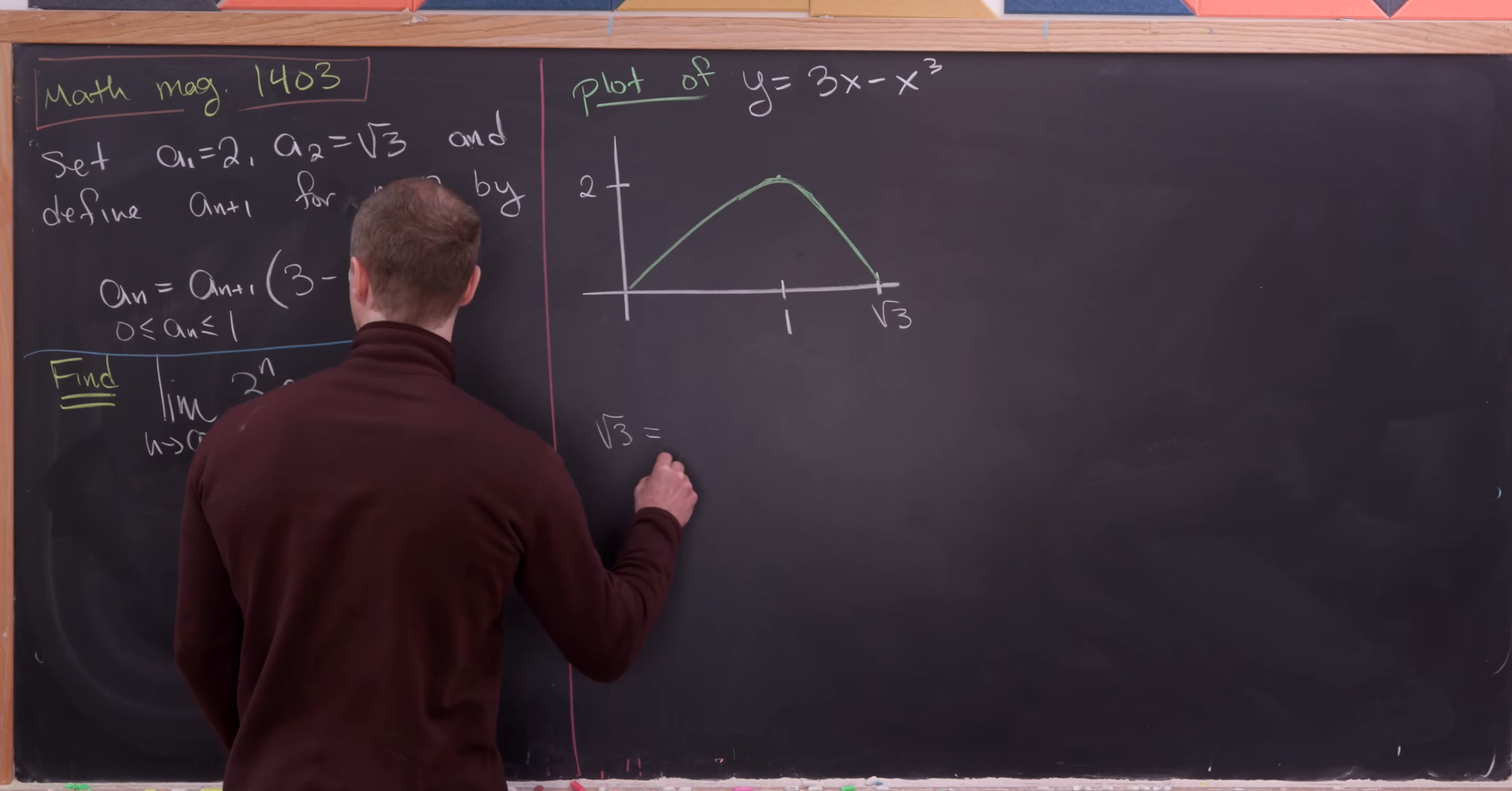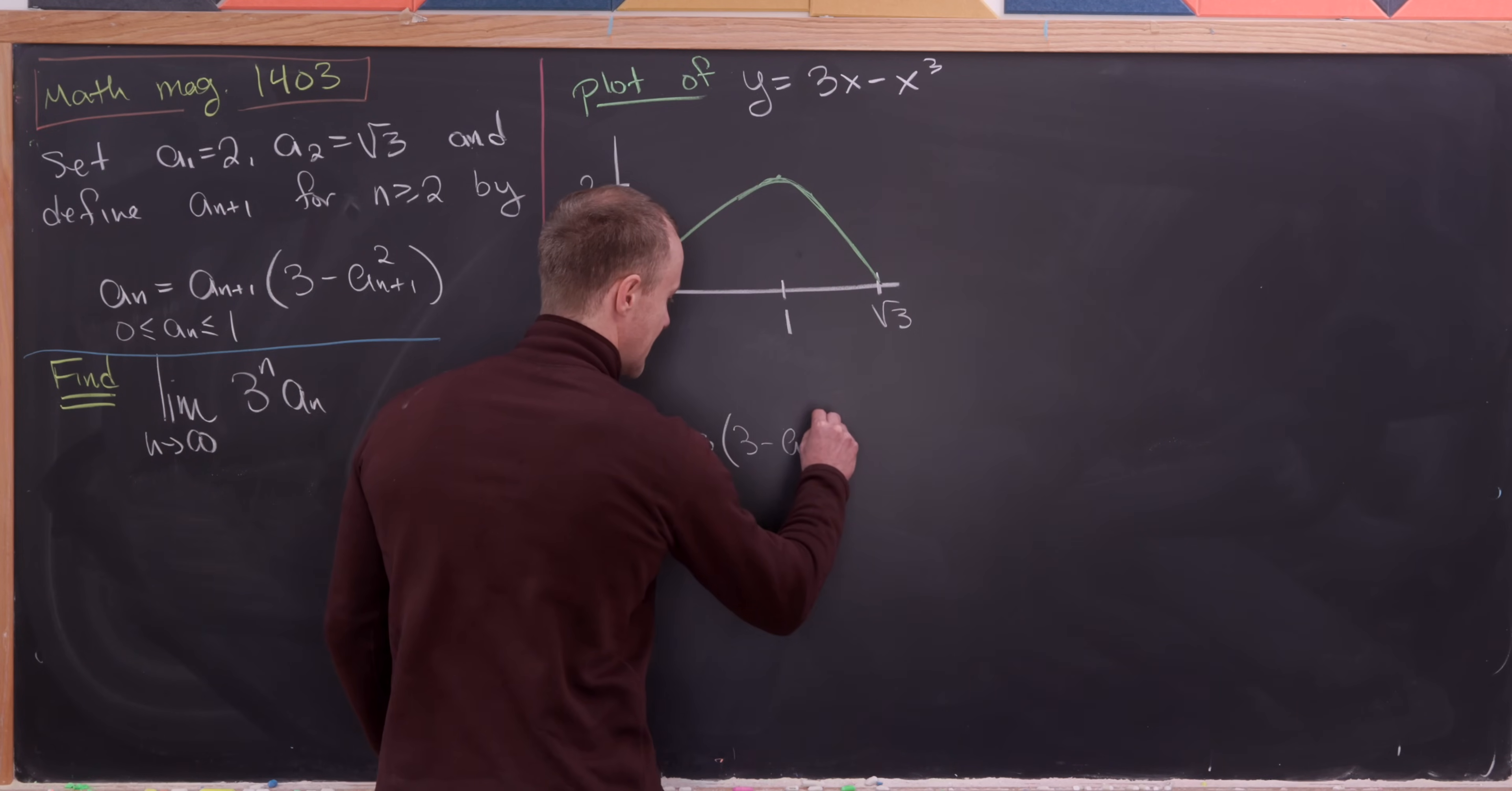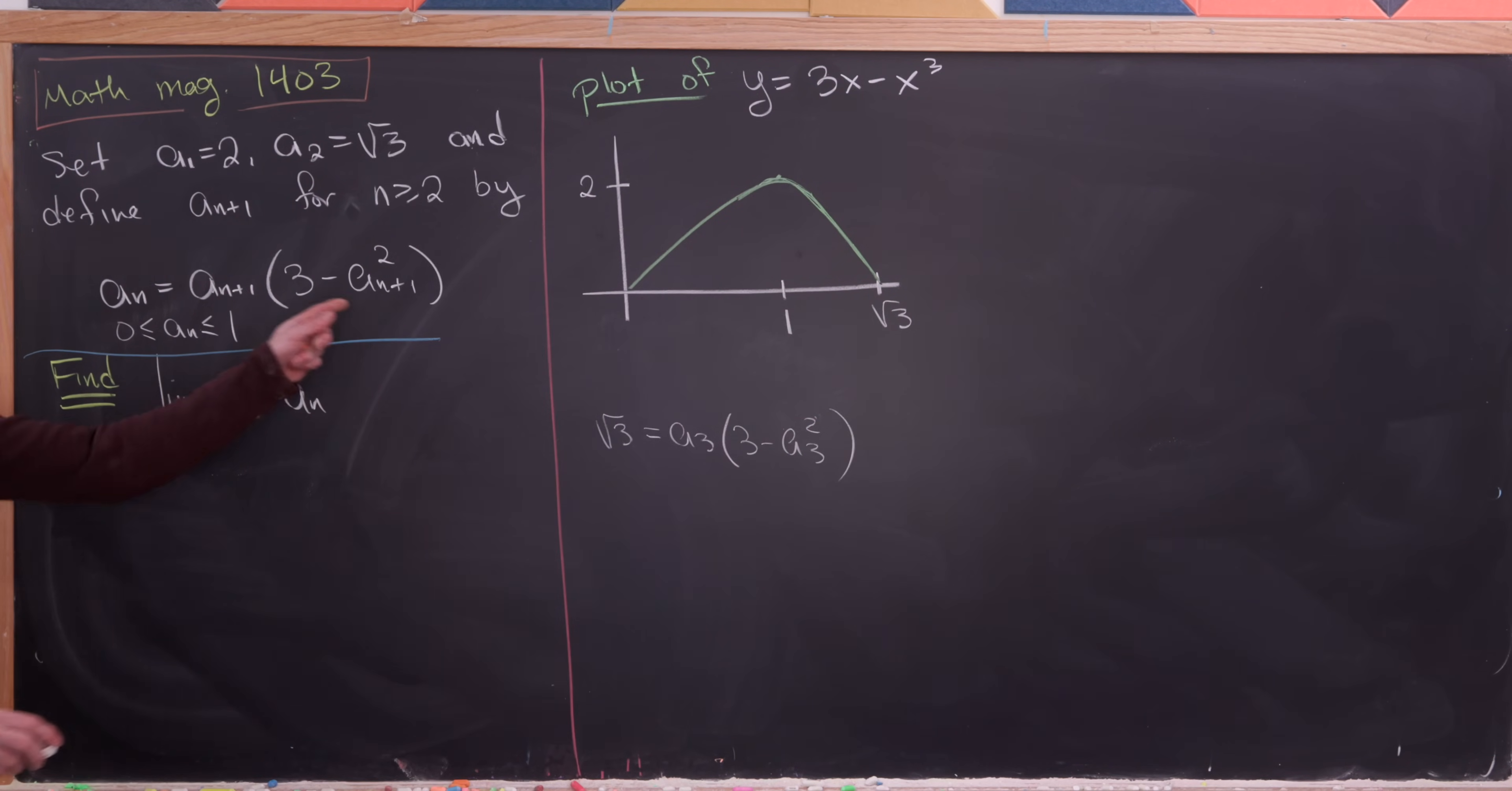So we'll have the square root of 3 equals a sub 3 times 3 minus a sub 3 squared. So that's just plugging the appropriate value of n up here and using the fact that a sub 2 is the square root of 3.